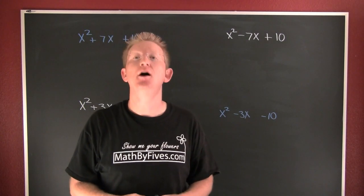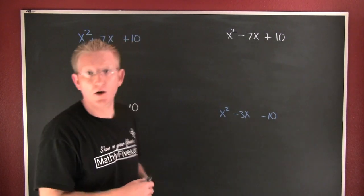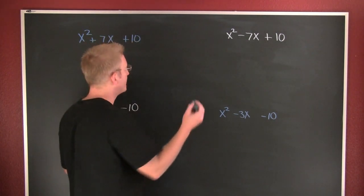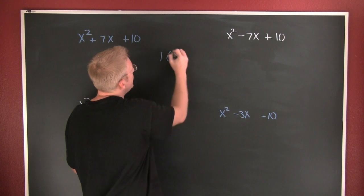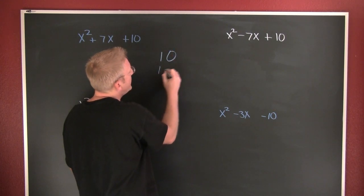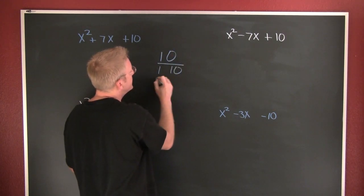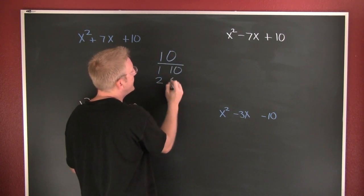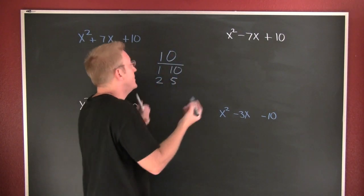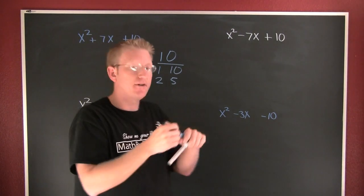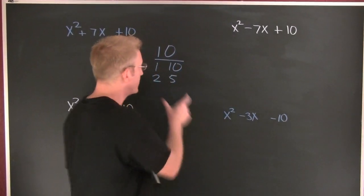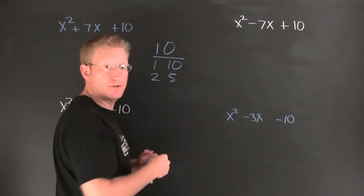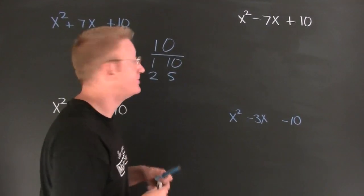I'm going to go ahead and break it down. 10 is 1 and 10, and 2 and 5. That's the set of all the factors. We know we're done because we've covered them all.